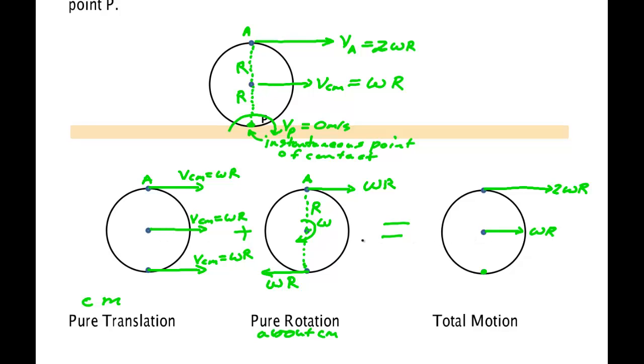But this advantage is that this is true for things besides rolling without slipping. It's true for any general motion. You may always consider it pure translation of the center of mass, pure rotation of the center of mass, add those together, and you get the most general motion that an object can exhibit.